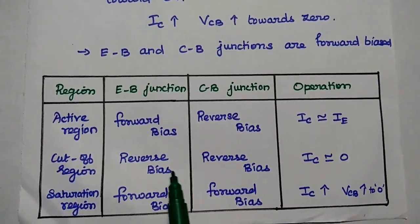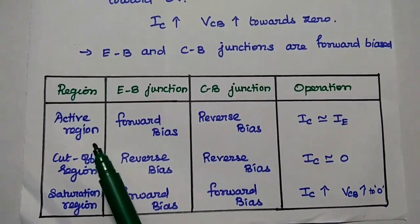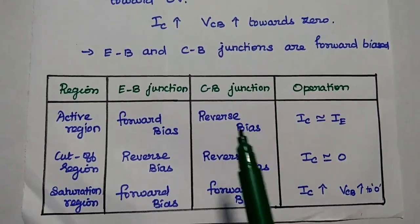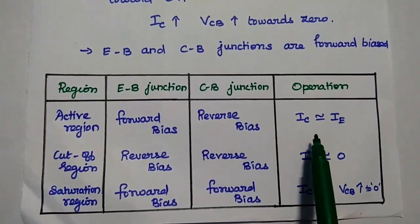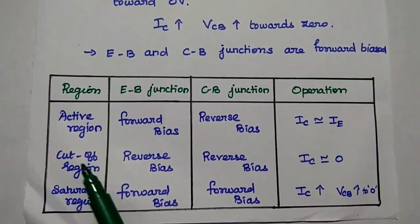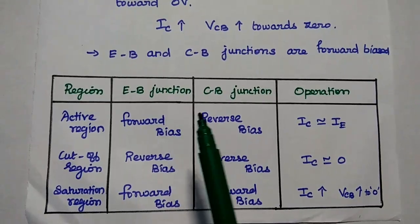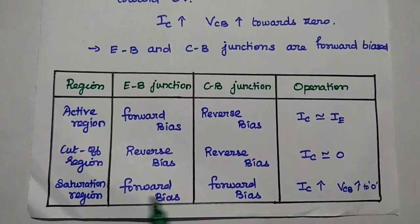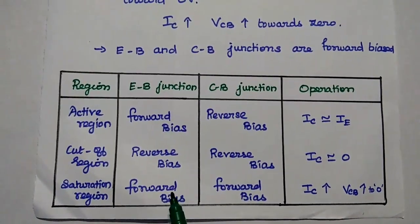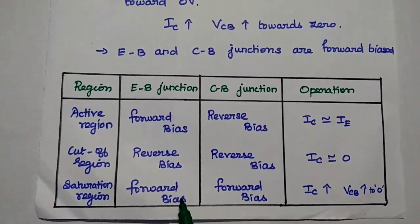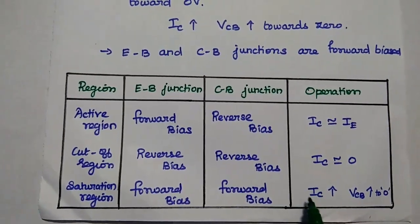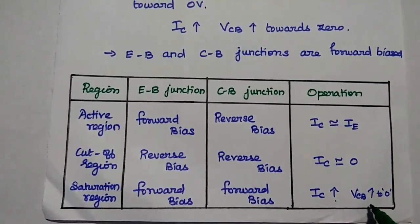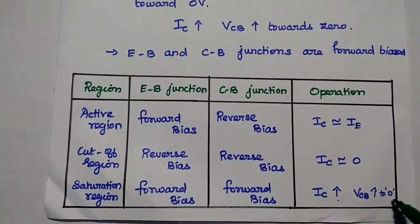The comparison of these three regions: in the active region, emitter-base junction is forward biased and collector-base junction is reverse biased — we get maximum output. In the cutoff region, both emitter-base and collector-base are reverse biased — there is no output. In the saturation region, both emitter-base and collector-base are forward biased — the output current increases exponentially as the output voltage increases to zero volts.